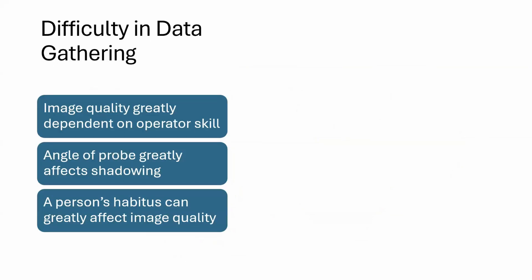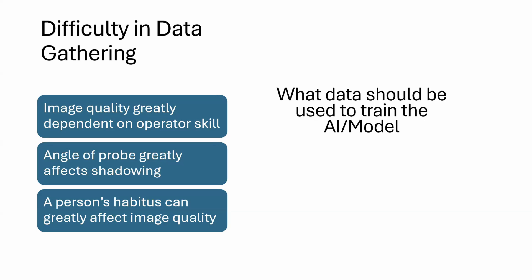In ultrasound, though, there are some very unique difficulties compared to other imaging techniques. It can be very difficult to get the image you want sometimes — someone who is very skilled versus someone who's not will very likely get a different quality of image. Shadowing, different body types, and patient habitus can also greatly affect that. So there's an important question to ask: what data should be used to train the AI model? Because whatever we train the model to know will greatly affect the outcome. Do we only use the best images? And if so, will the model not be effective for someone who's not skilled at ultrasound?